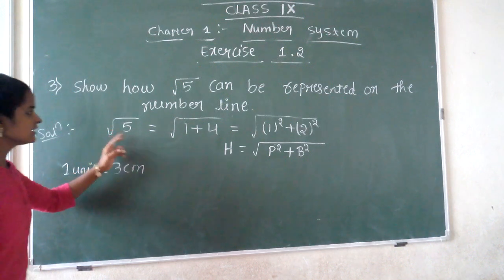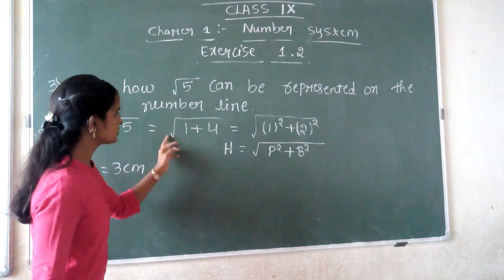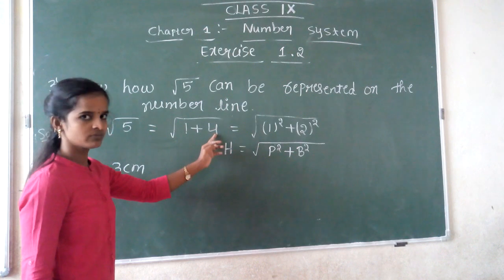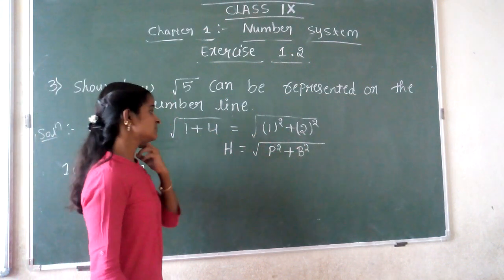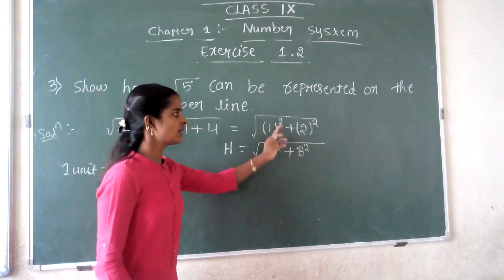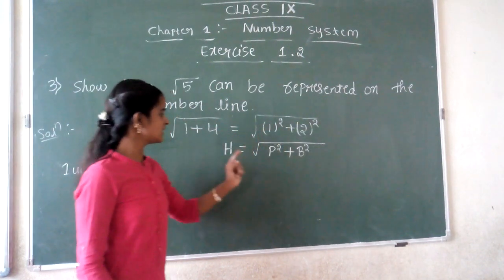√5 can be written in the form 1 + 4. This can be expressed using the Pythagorean theorem: 1 can be written as 1², and 4 can be written as 2².